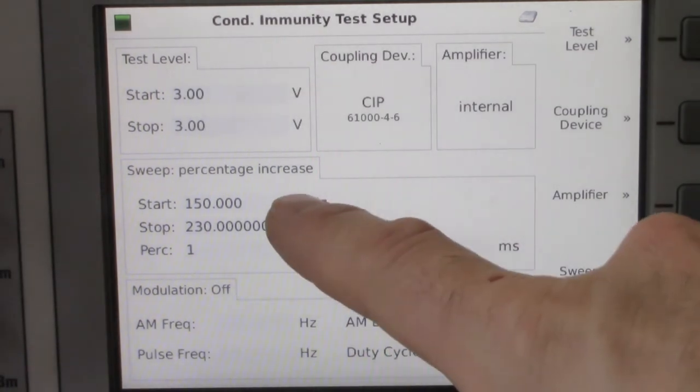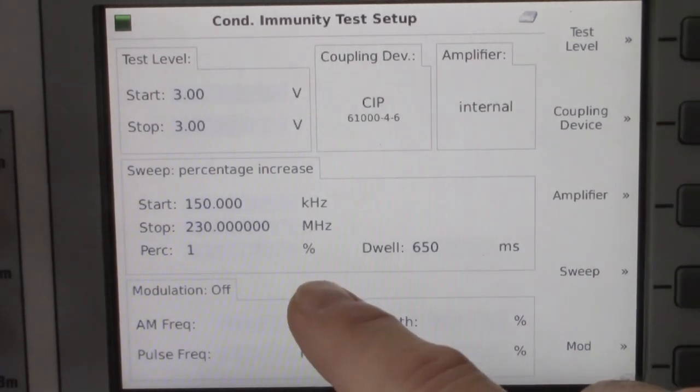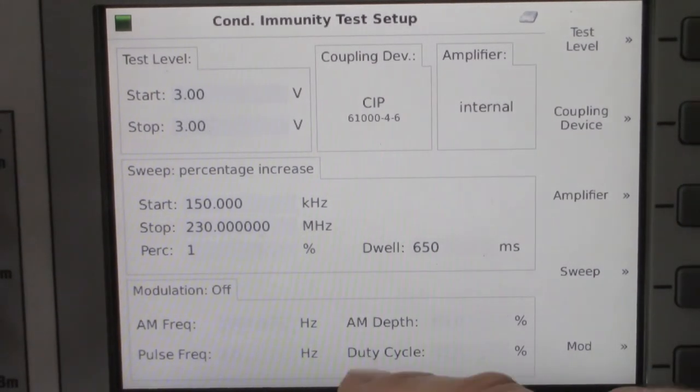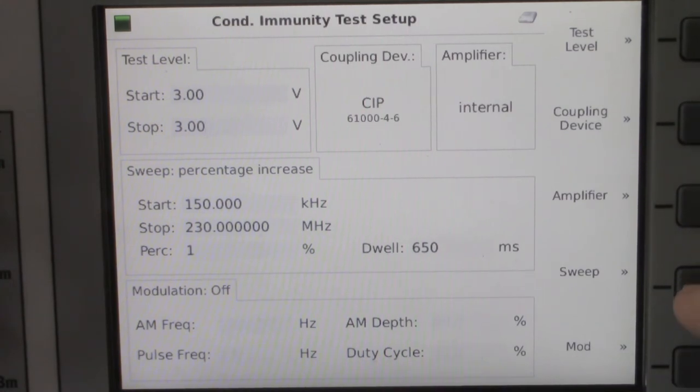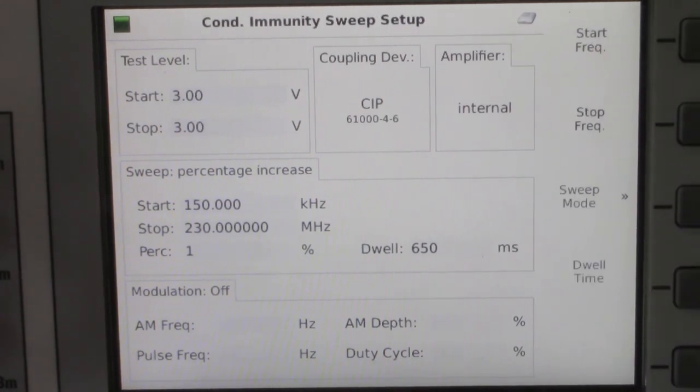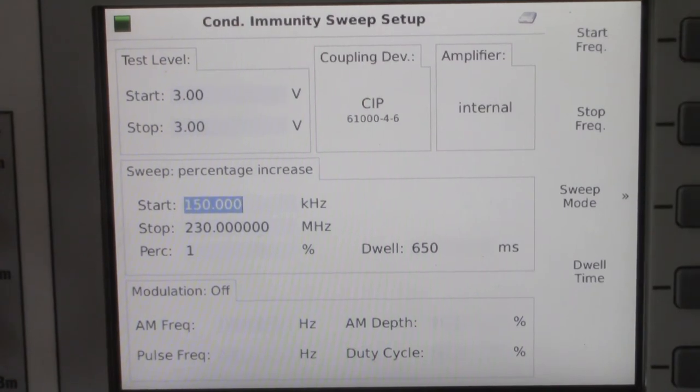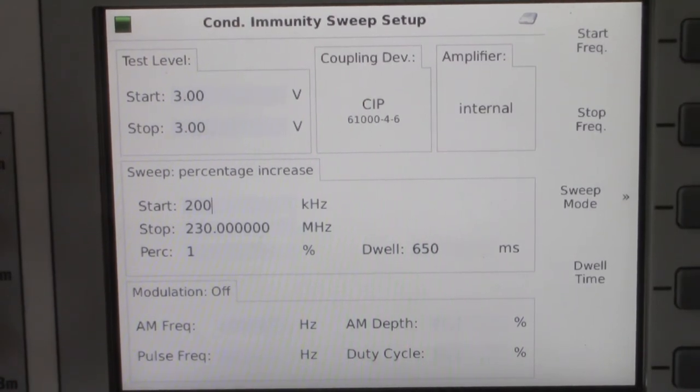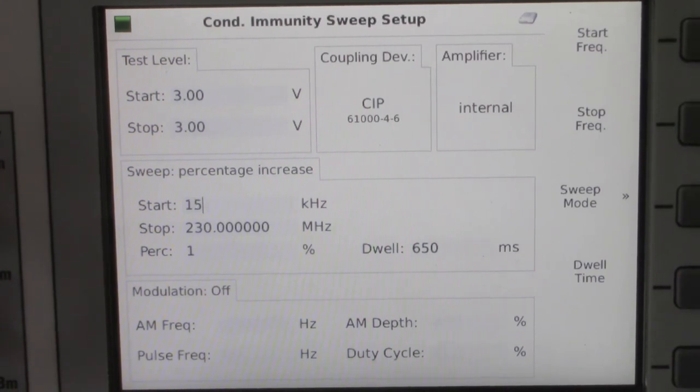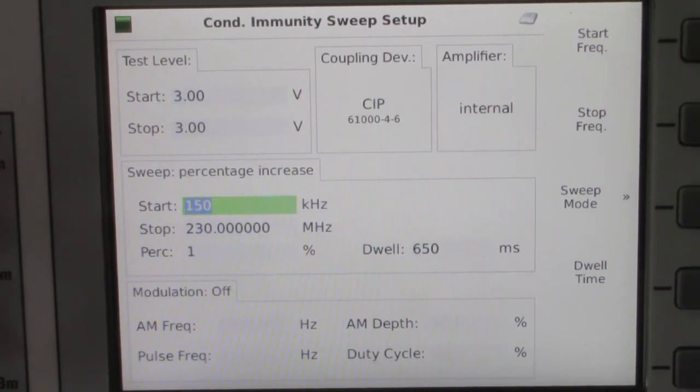Alright, now we'll look at the sweep. You will see it set for 150 kilohertz to 230 megahertz. You can change that by clicking on the sweep and changing the start frequency. If you want to change it to, let's say, 200, you can do that. However, today we're going to stick with 150 kilohertz.